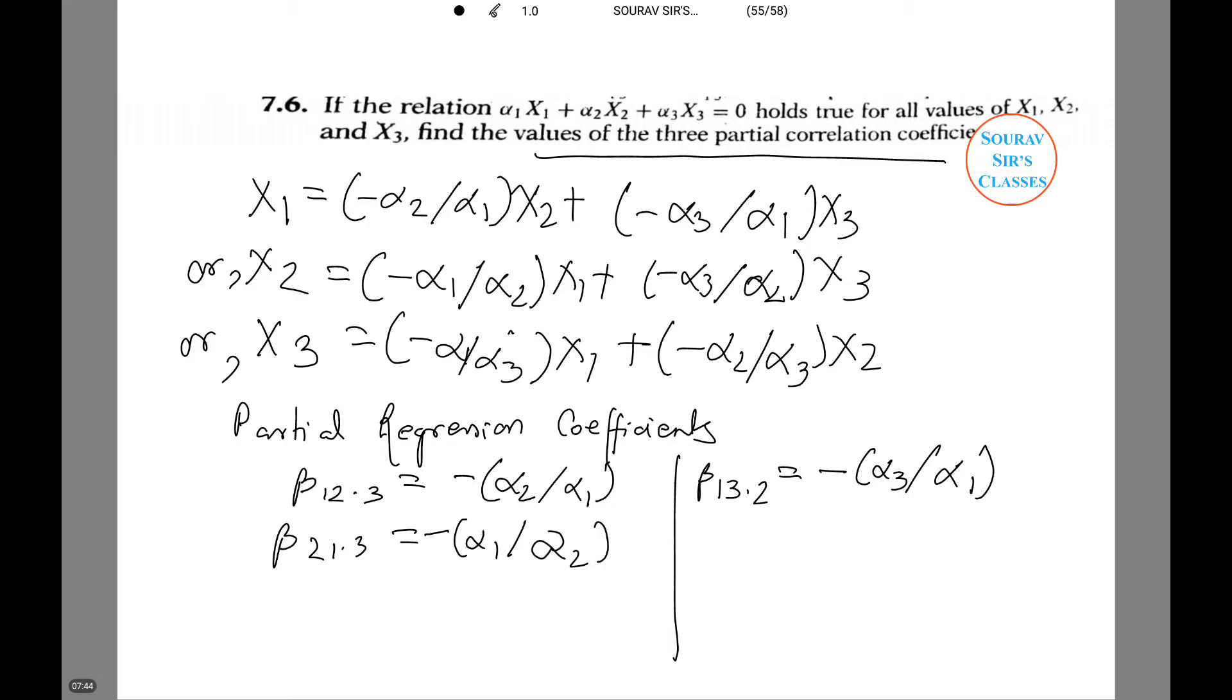Beta 2 3 dot 1 equals minus alpha 2 by alpha 3. Beta 3 1 dot 2 equals minus alpha 1 by alpha 3. Beta 3 2 dot 1 equals minus alpha 2 by alpha 3.